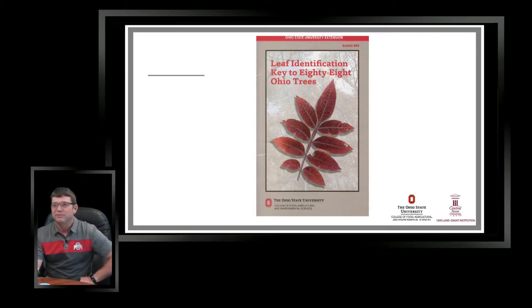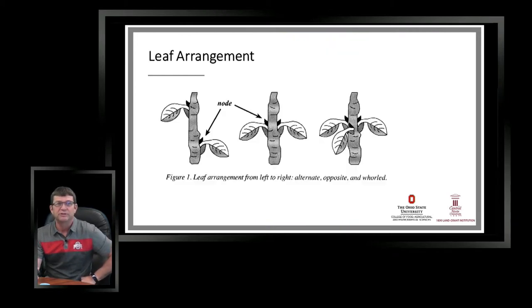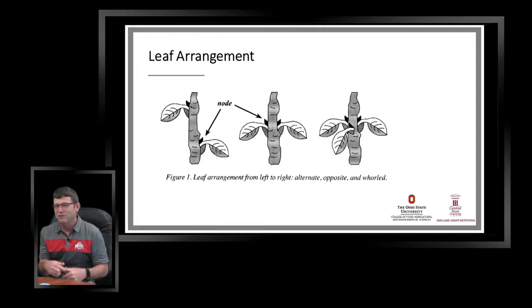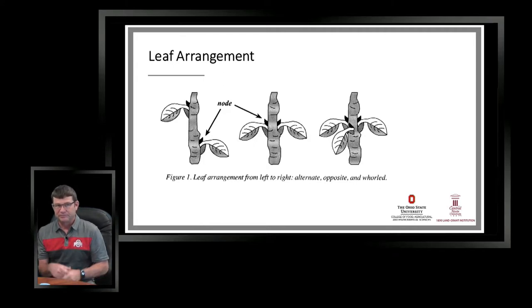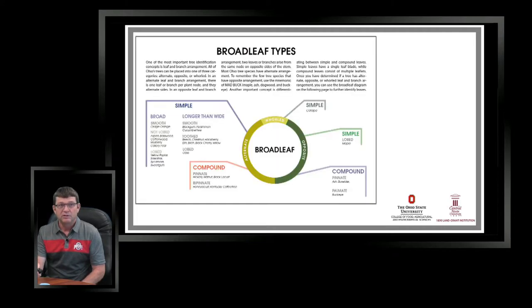This is a publication we use quite often to review and teach some of the basics of tree ID — it's a bulletin produced through Ohio State University Extension. What I first want to do is review a little bit about leaf arrangement: that's how the leaves are attached to the twig, where the buds are, and it also determines the branching down the road.